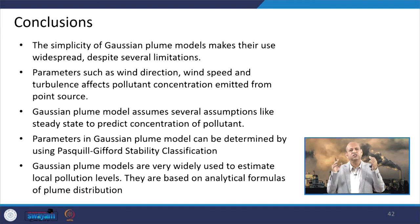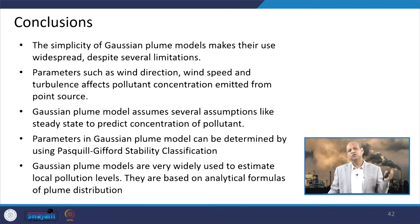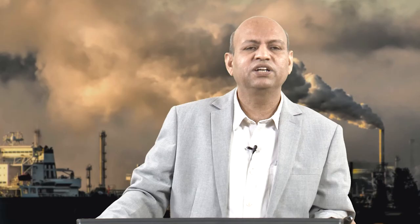In conclusion, the simplicity of the Gaussian model makes it very popular and widely used, despite its several limitations. Atmospheric scientists and environmental engineers are very fond of using it for policy-related calculations or simple estimations. Parameters such as wind direction, wind speed, and turbulence affect the pollutant concentration emitted from the point source and are all incorporated in this model.